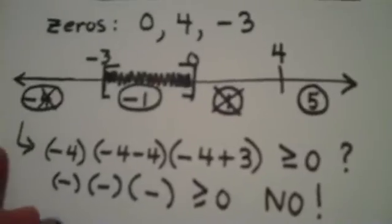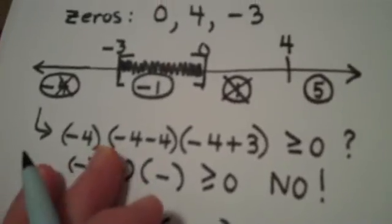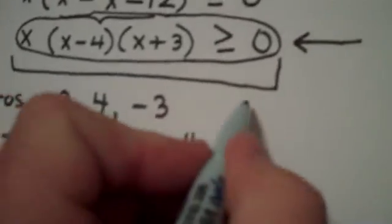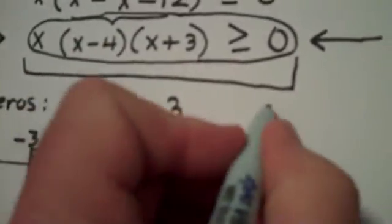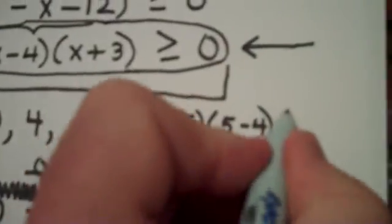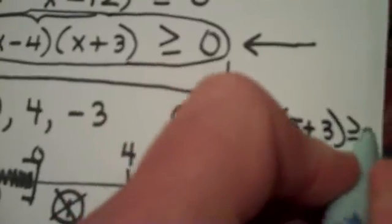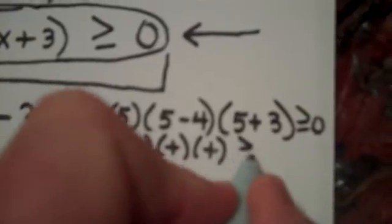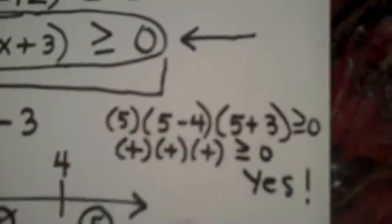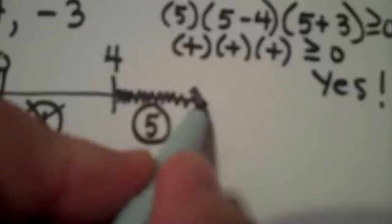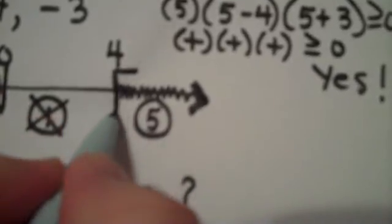And my final number to test would be a five. When I test five, let me come up here to test and I'm running out of room on my paper. I'm going to my inequality and plugging in. I have five times five minus four times five plus three is greater than or equal to zero. A positive times a positive times a positive is definitely greater than or equal to zero so yes. Five works which means all the numbers in its region work. Four is included and the reason of course we're including four is it is a zero.